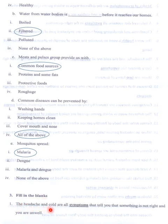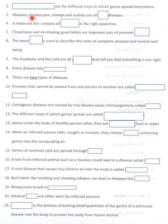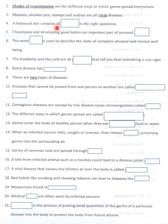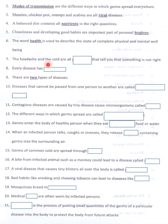Fill in the blanks. Aches and cold are symptoms that tell you something is not right and you are unwell. The different ways in which germs are spread everywhere are called modes of transmission. Measles, chicken pox, mumps and scabies are all viral diseases. A balanced diet contains all nutrients in the right quantities. Cleanliness and developing good habits are an important part of personal hygiene. The word health describes the state of complete physical and mental well-being.